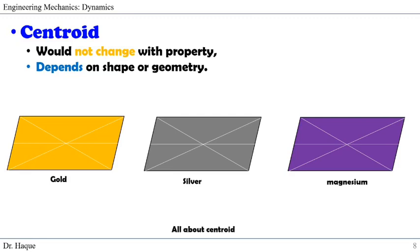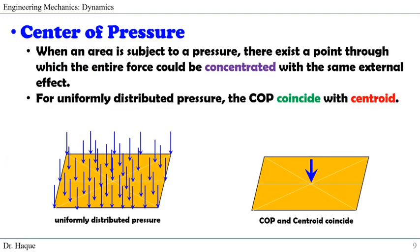So that was all about centroid. Now let's see the other three definitions and how they are related and different. A center of pressure is defined as: when an area is subject to a pressure, there exists a point through which the entire force could be concentrated with the same external effect. So if you see the image, there is a pressure on the surface and we can replace that entire pressure on the surface by a single point — and that is the center of pressure. For uniformly distributed pressure, where the pressure distribution doesn't change over distance, the center of pressure and the centroid will be the same point.